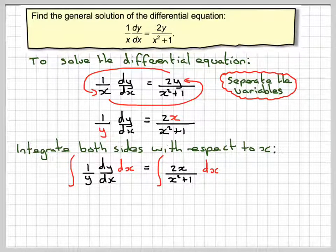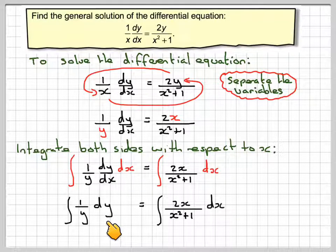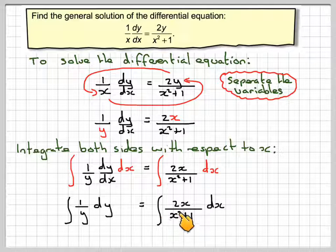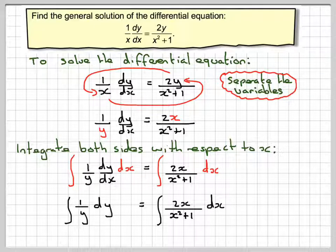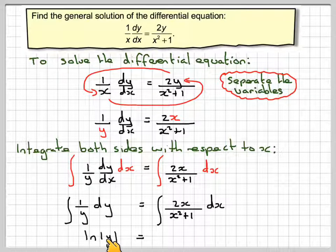This will just cancel out and you're just going to get 1 over y dy. And you've got the integral of 2x over x squared plus 1 dx. Now your ability to proceed is your ability to integrate. The integral of 1 over y is ln of the absolute value of y.